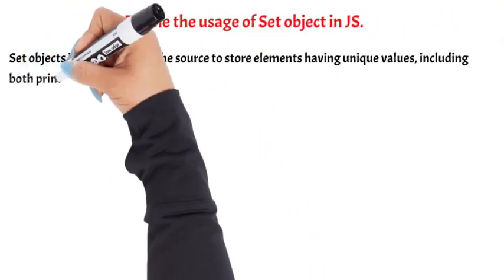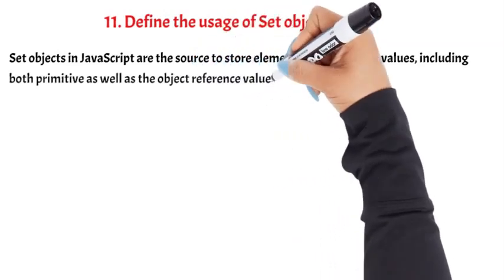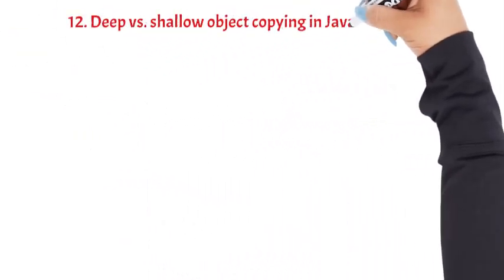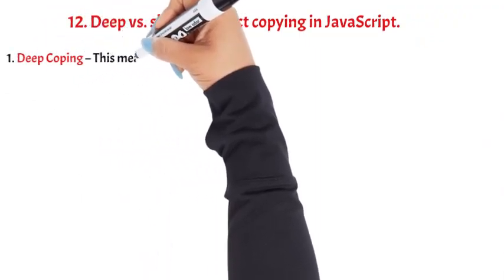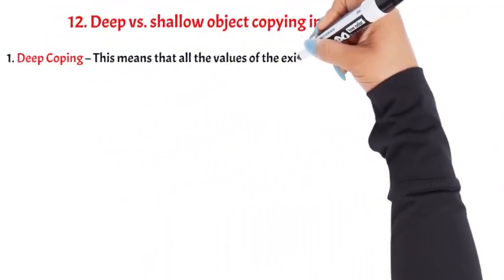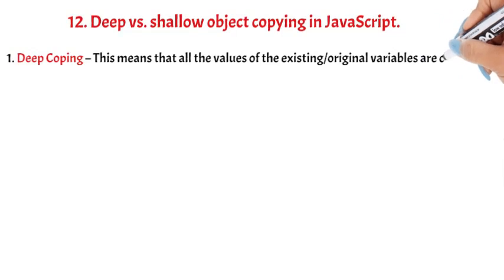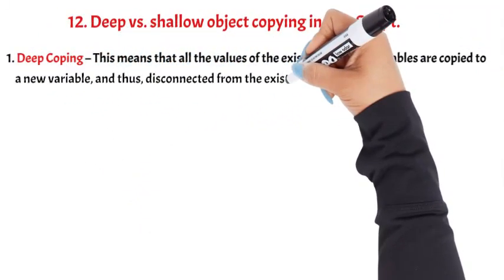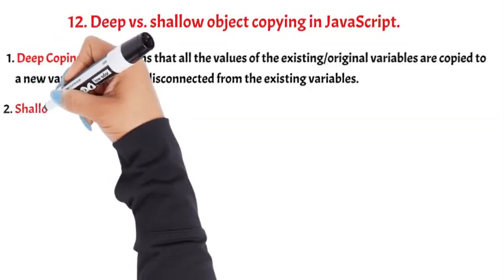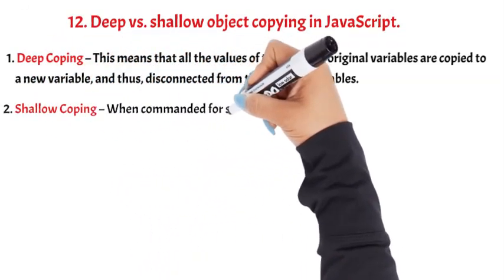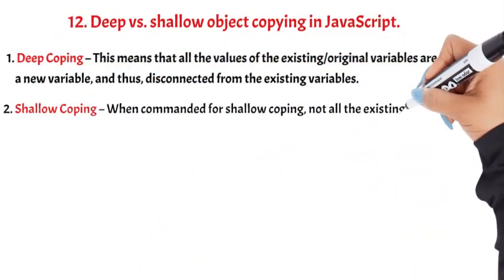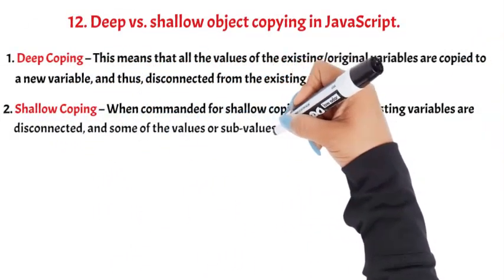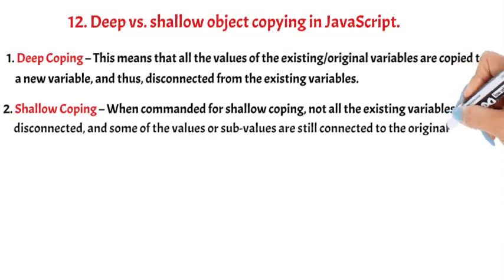Question 12: Deep vs Shallow object copying in JavaScript. Deep copying means that all the values of the existing/original variables are copied to a new variable, and thus disconnected from the original variables. Shallow copying means that not all existing variables are disconnected — some of the values or sub-values are still connected to the original.